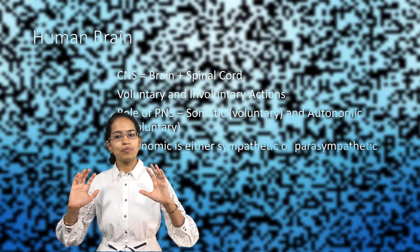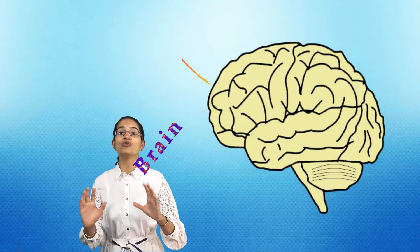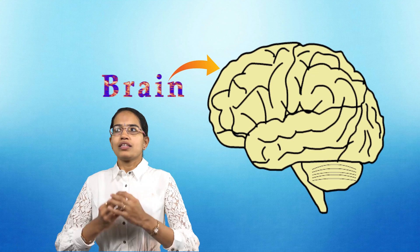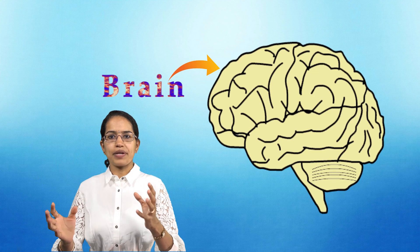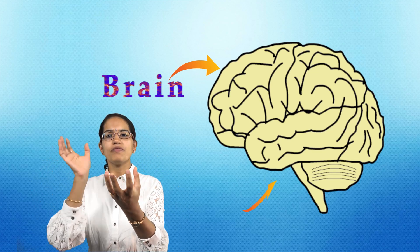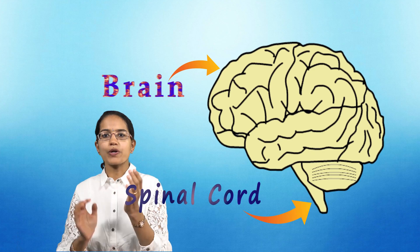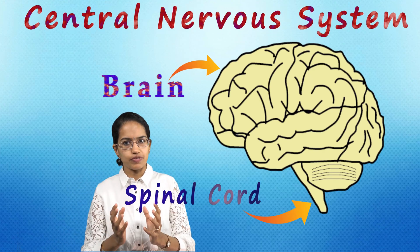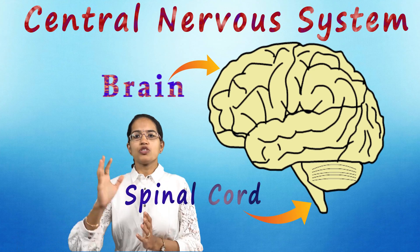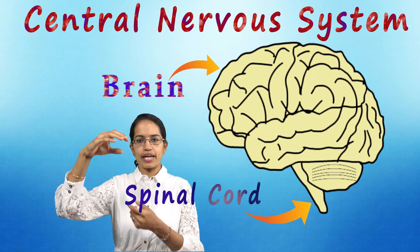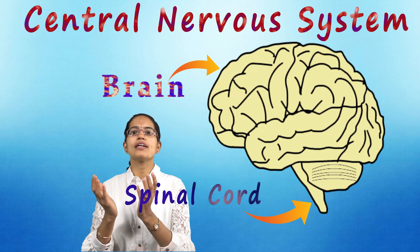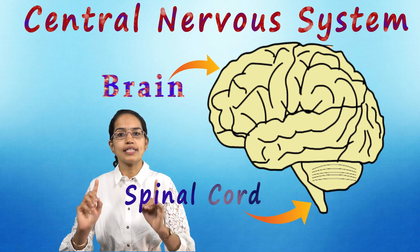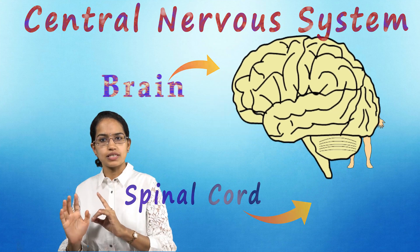On to the human brain — the most complicated structure so far. This human brain, along with the spinal cord, together is known as the central nervous system. So the brain and the spinal cord together — we call this the central nervous system.